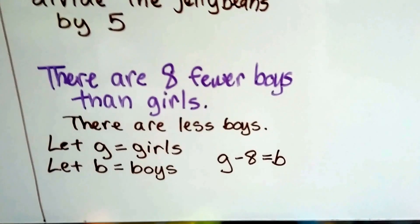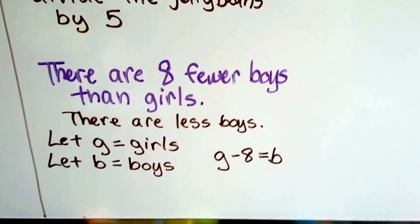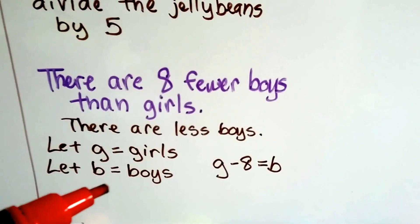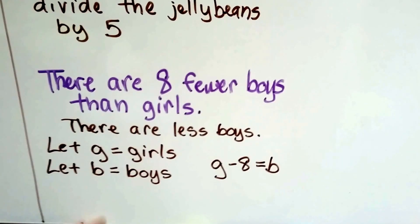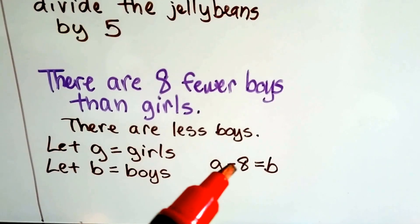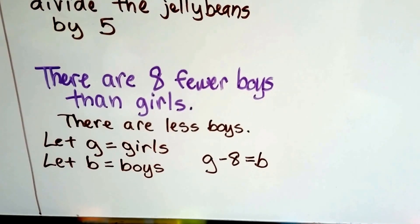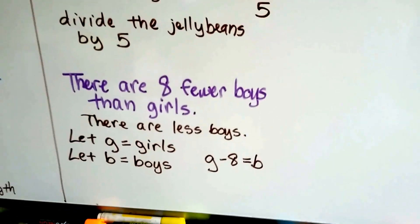How about this one? There's 8 fewer boys than girls. Well, that means there's less boys, right? We're going to let G be girls and B be boys. Doesn't that make sense? So whatever the girls are, if you take away 8 from it, that's going to tell us how many boys there are. And that's our equation.